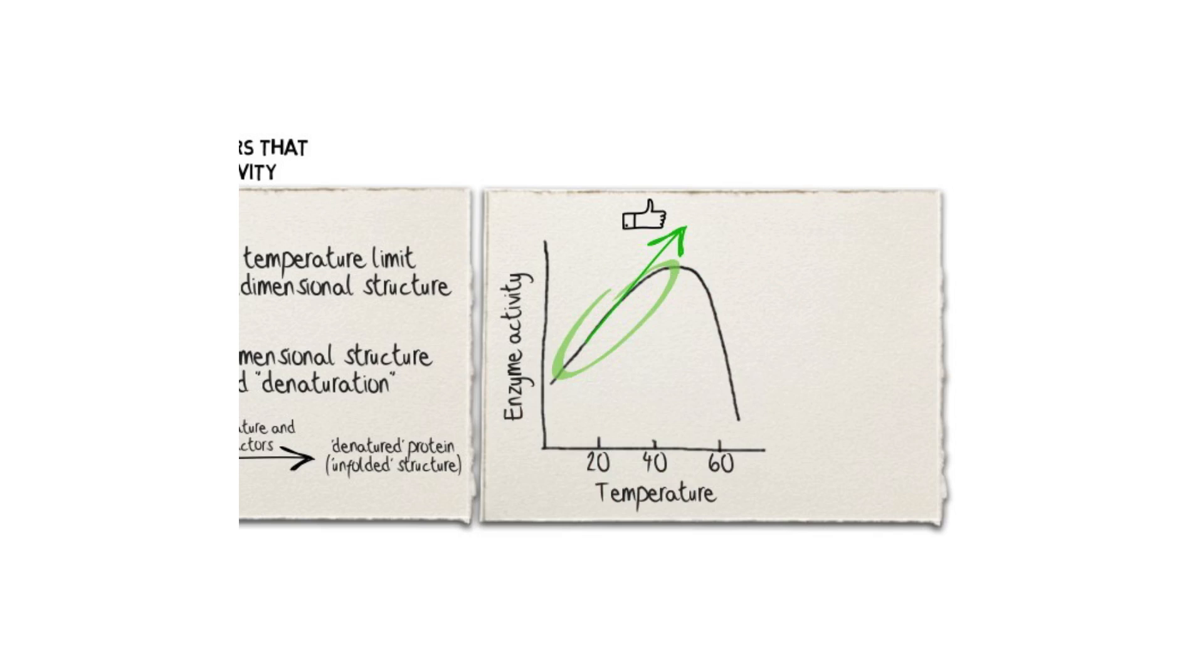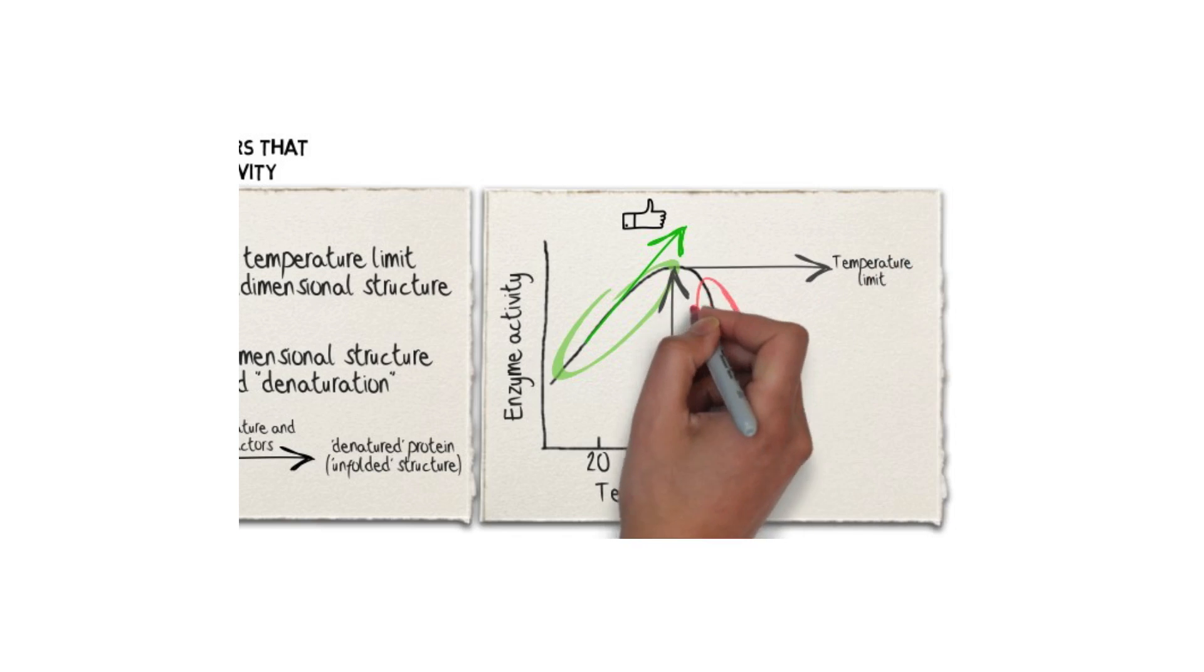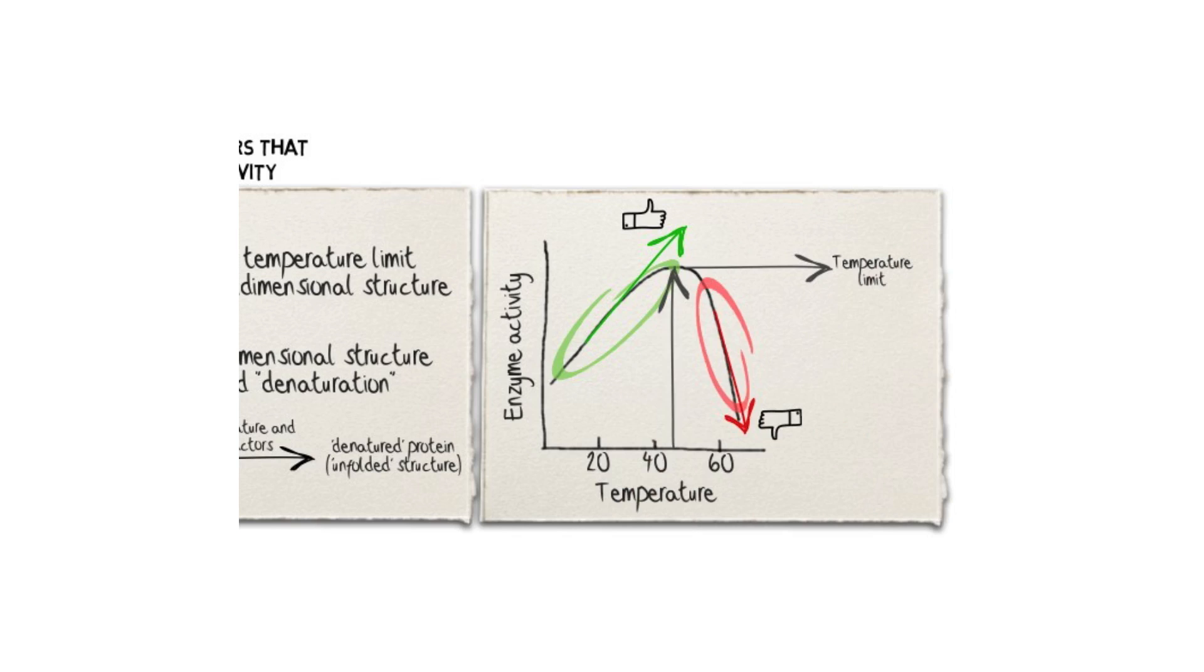However, when the temperature goes beyond a certain point, the structure of the enzyme begins to denature, causing the enzyme to lose its activity. Notice that the rate in which enzymatic activity is lost is faster than the rate in which the activity of the enzyme increases as temperature rises. Just look at how the curve in that graph seems to go down faster than it goes up.